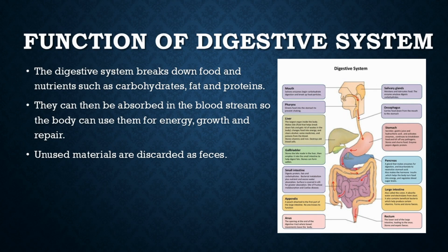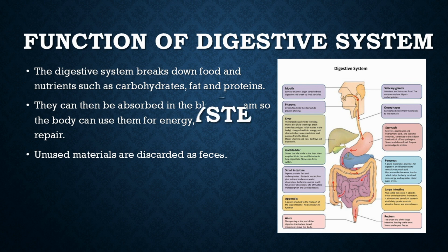Function of the digestive system. The digestive system breaks down food and nutrients such as carbohydrates, fat, and proteins so they can be absorbed into the bloodstream. The body can then use them for energy, growth, and repair. Unused materials are discarded as feces.